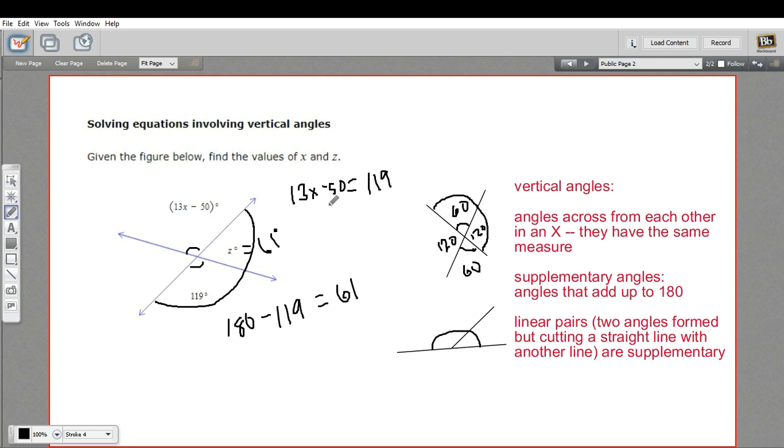I'll need to get the x term alone. So I will add 50 to both sides. And that gives me 13x equals 169.